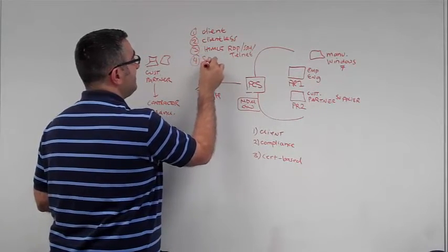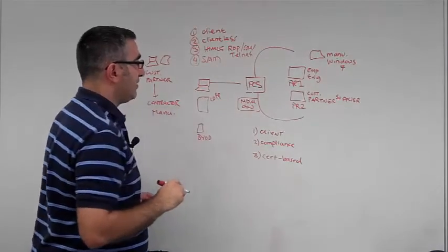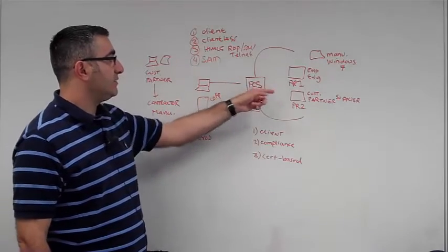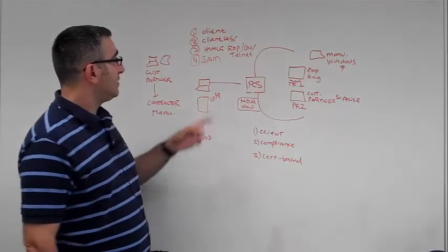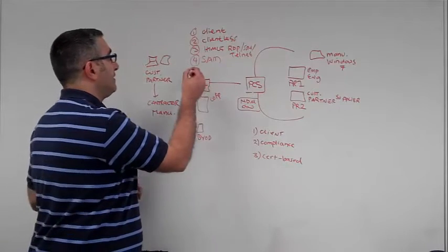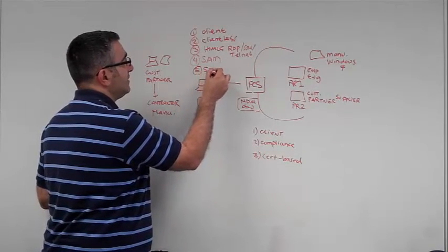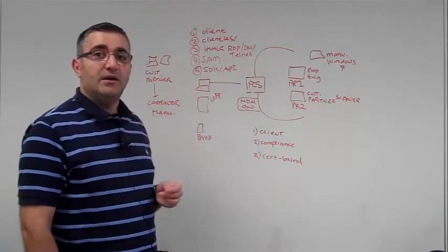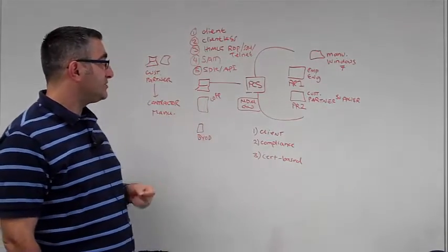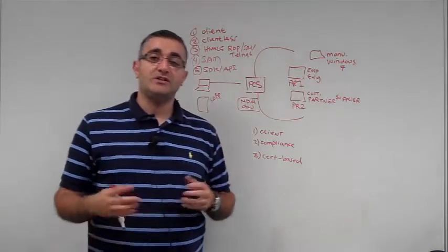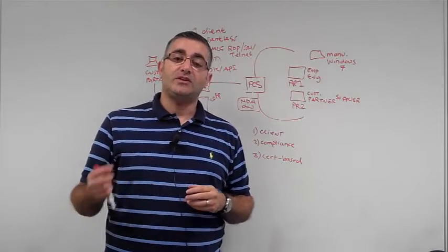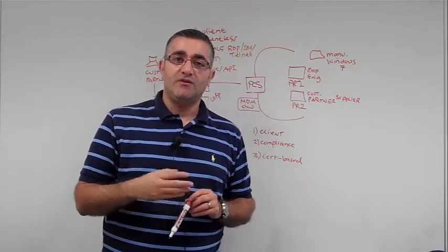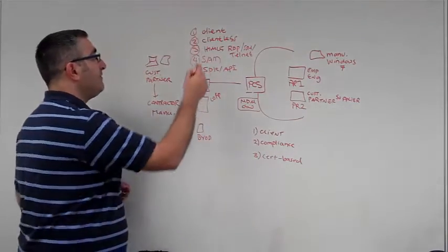We have something called SAM, which is for applications. So if I have certain applications and I just want those applications to connect and then use the tunnel, we can also deploy SAM. We have SDKs and APIs. The SDK and API can be used for desktop applications, for mobile applications. That way if you have custom apps that you want to use and you don't want to have to deploy the VPN client, you want to make it as simple as possible for the end user, you can do that.